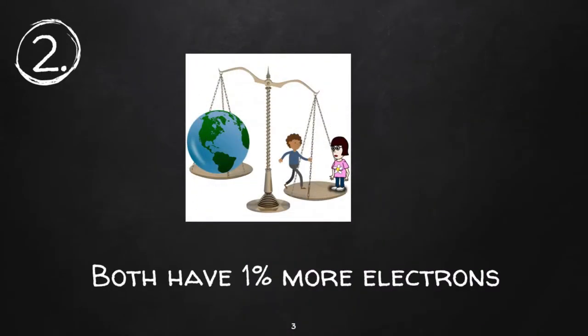Now consider two humans standing one arm's length apart from each other with one percent more electrons than protons. The force of repulsion would be high enough to lift the weight of the Earth.